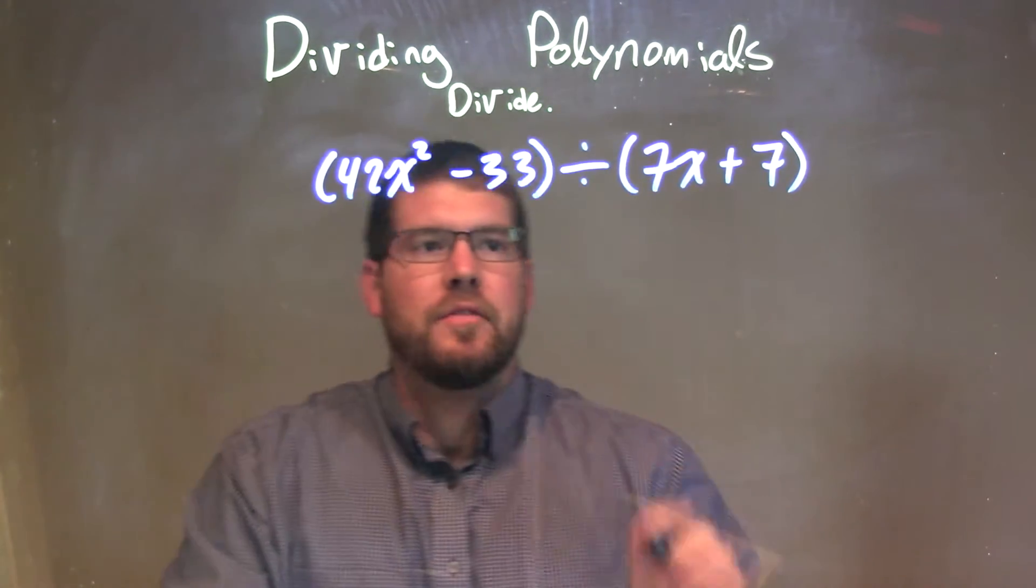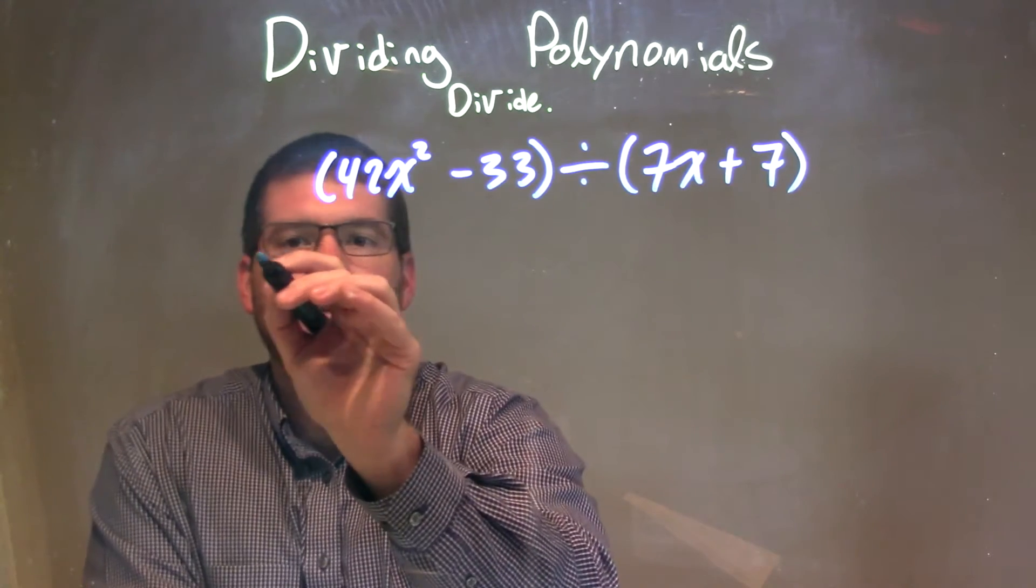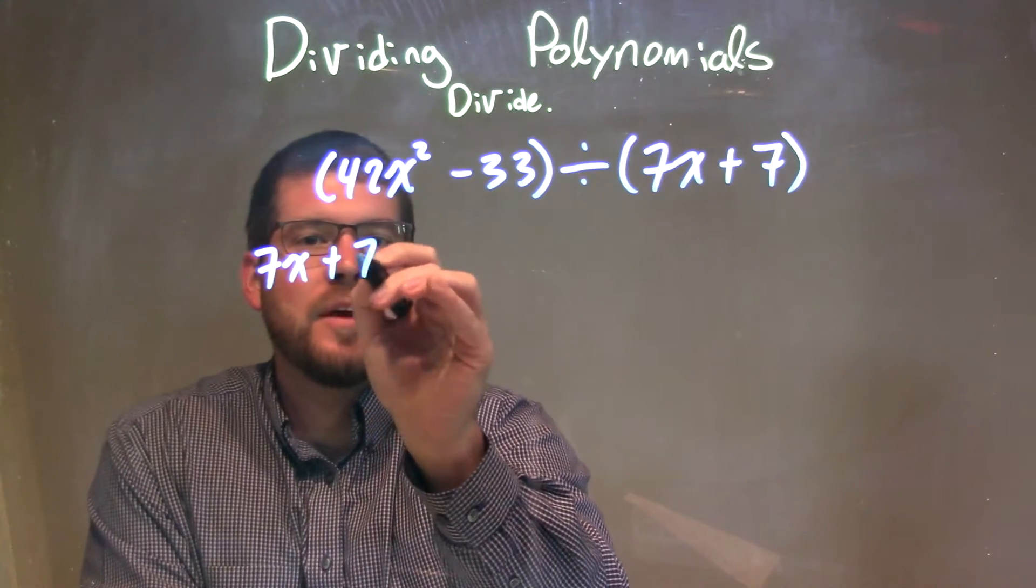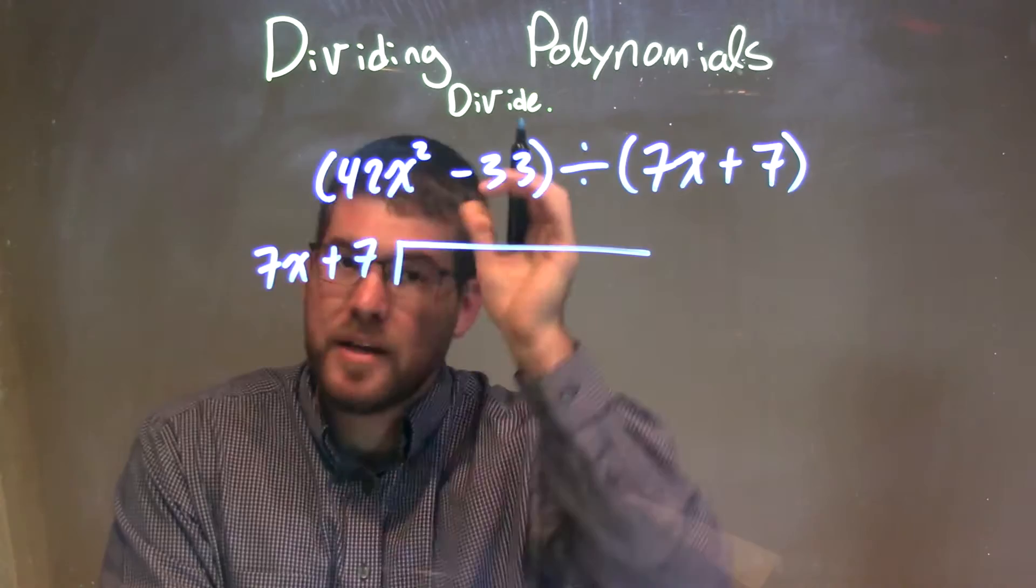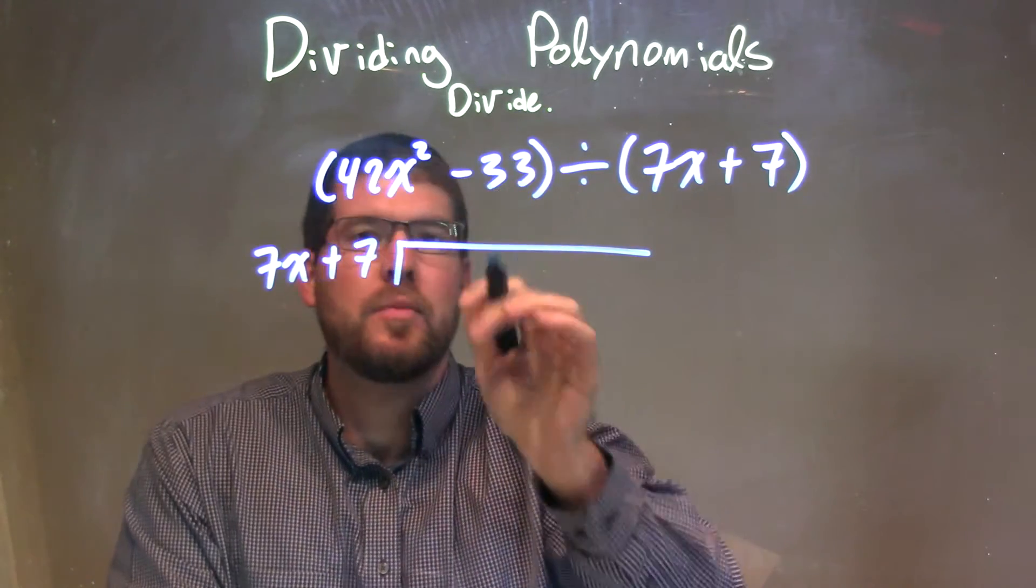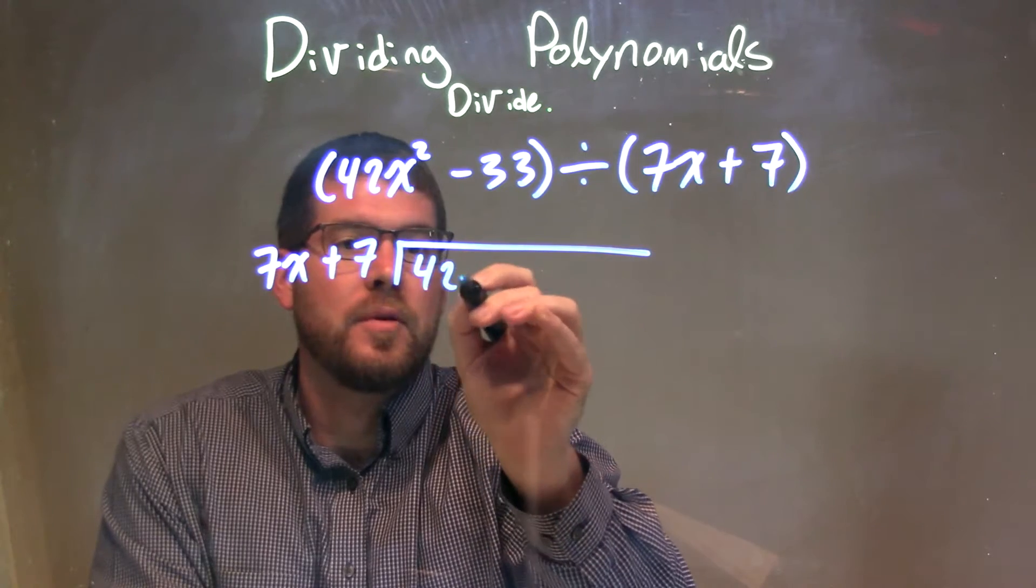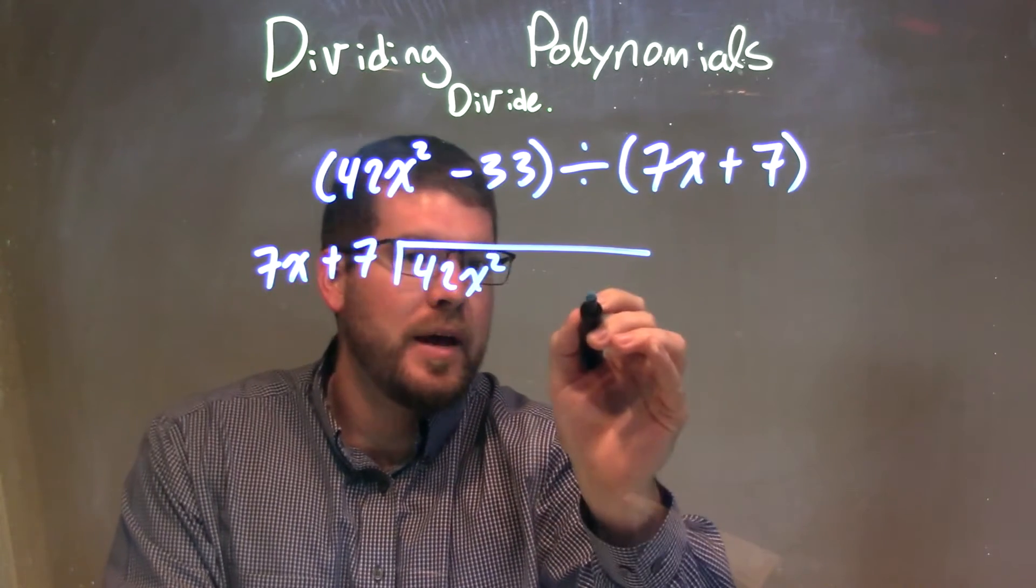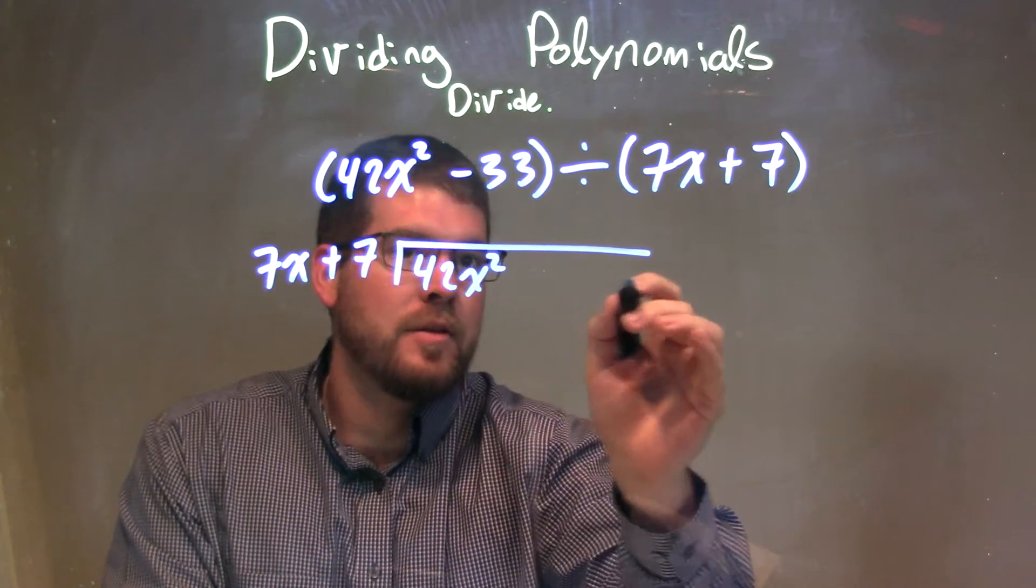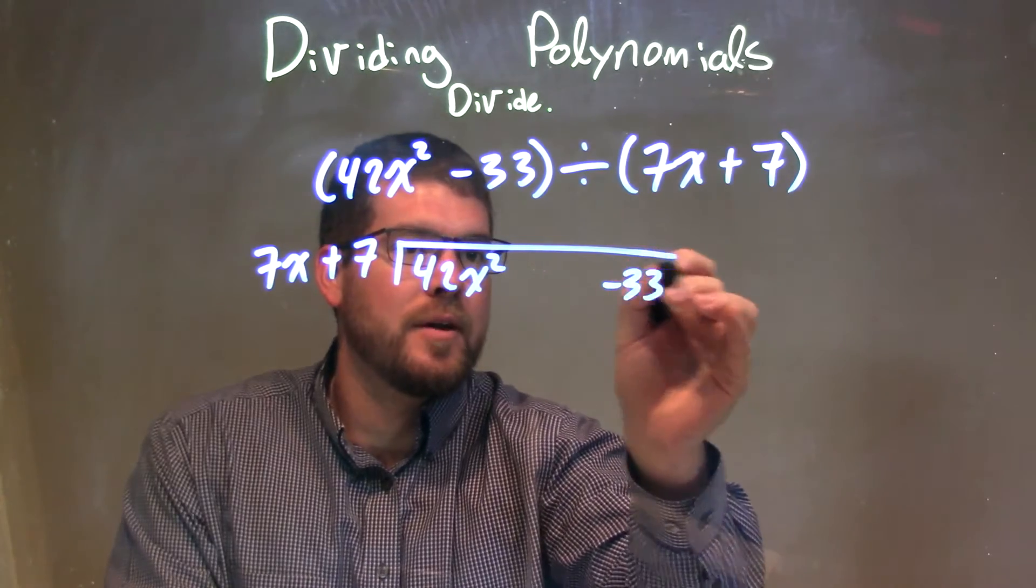Well, I'm going to rewrite this in long division form. So I have my divisor, 7x plus 7 here, and that goes into my dividend. My dividend, what I'm going to do this time, instead of putting a 0 in front of my x, I'm going to just give a space there. So I have 42x squared, space for the plus of the x values, and then minus 33 over here.